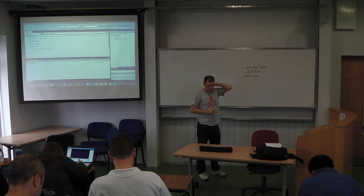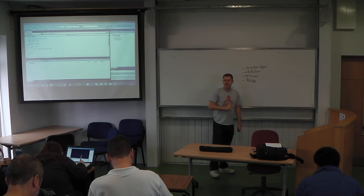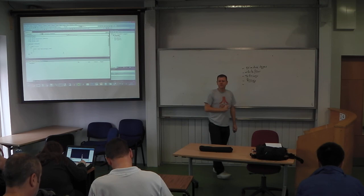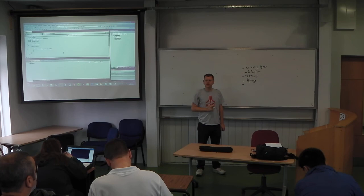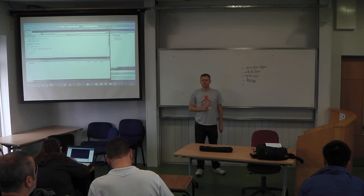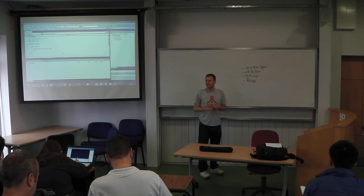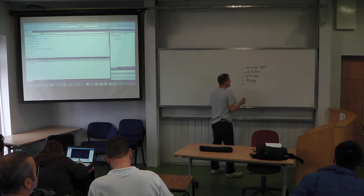Today we're going to start looking at arrays in C#. You guys have done arrays in first year in C, so we basically do the same sort of stuff, but I'll show you the C# way. An array is a collection of objects all of the same type. We'll look at the C# way of doing an array, which is very similar, with a few small differences and some nice improvements.